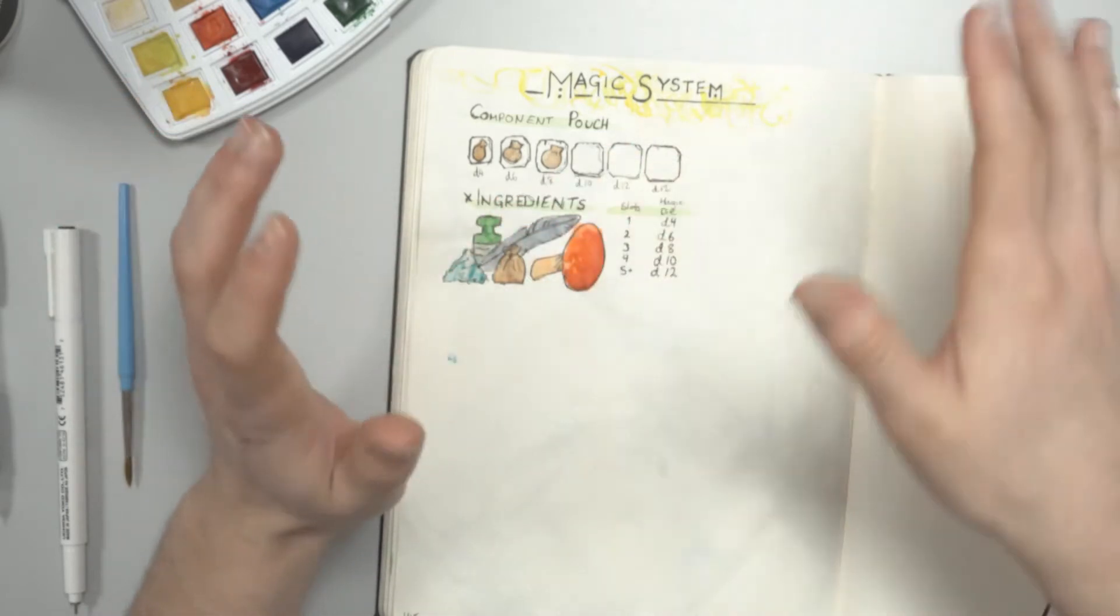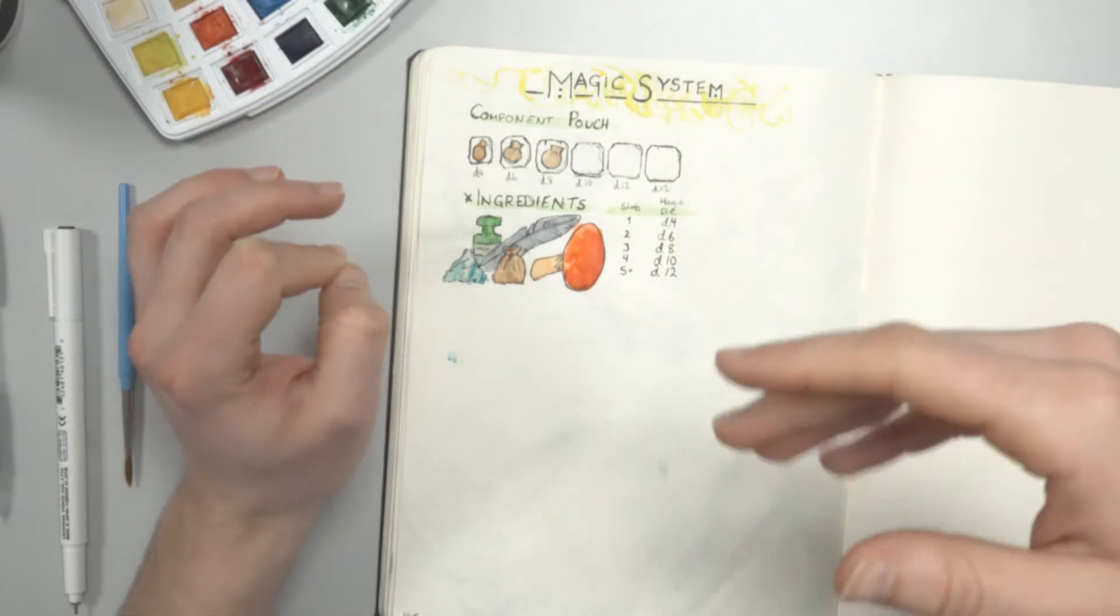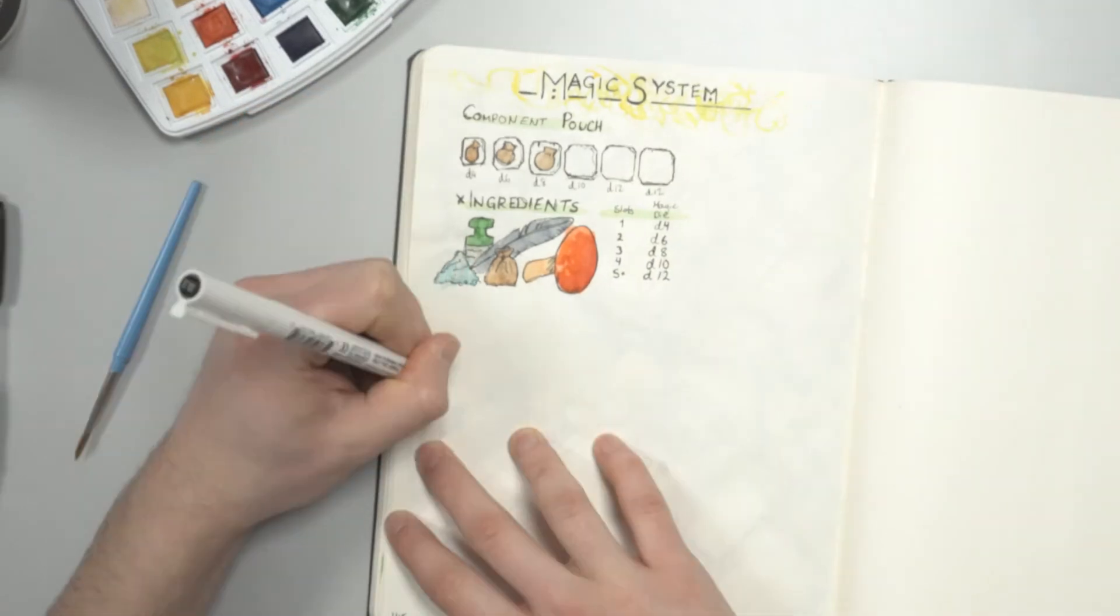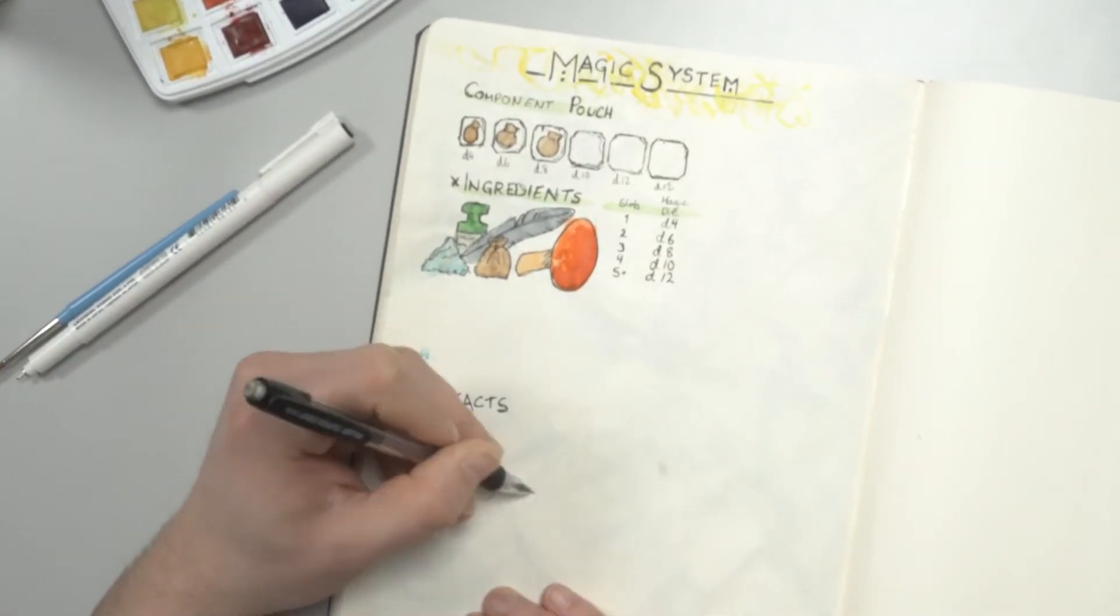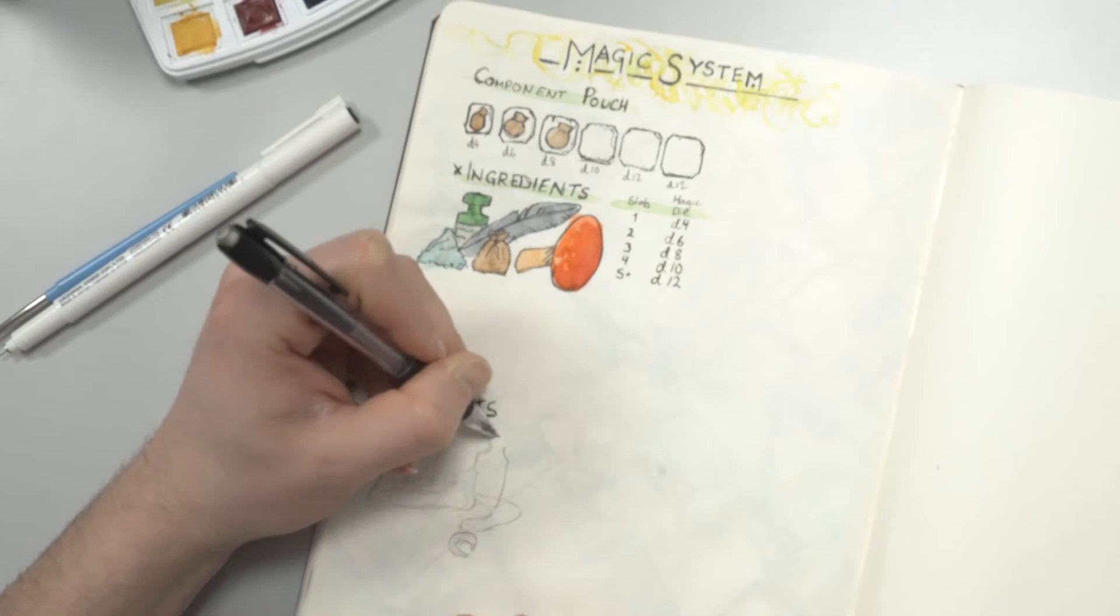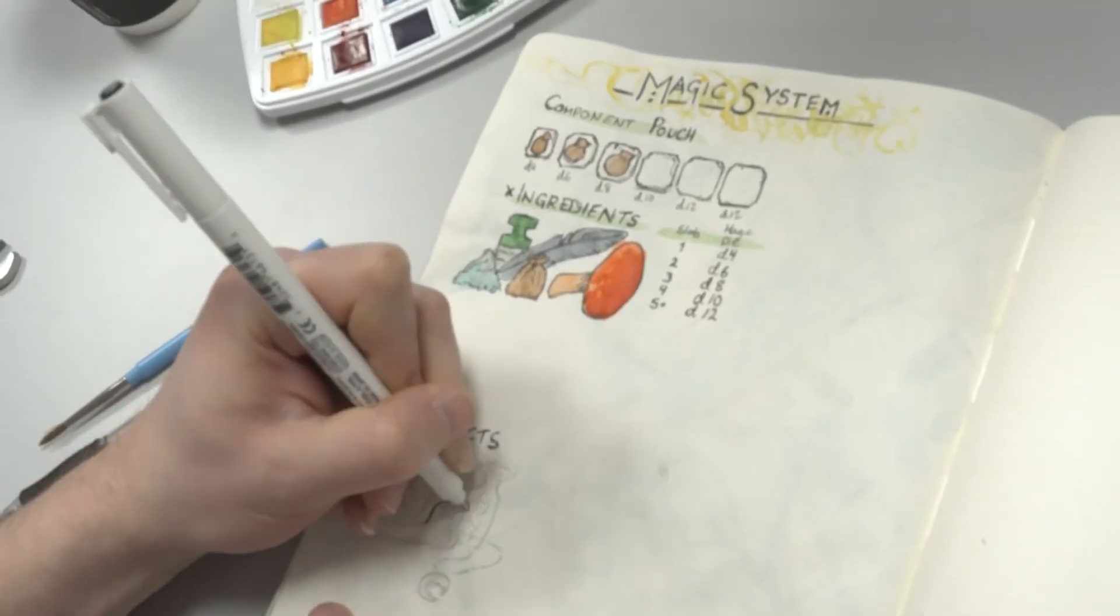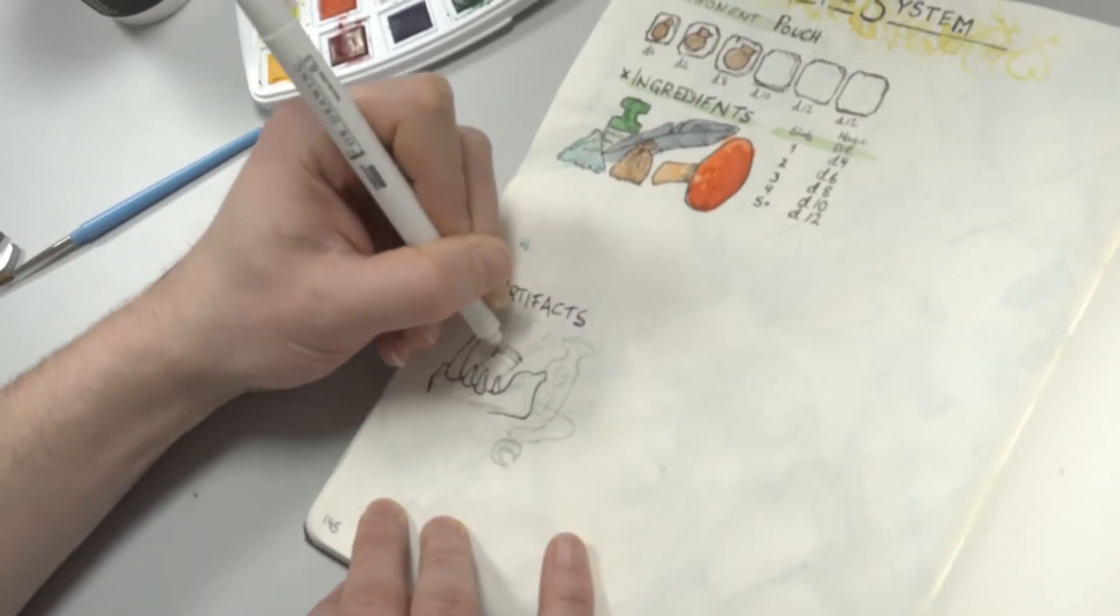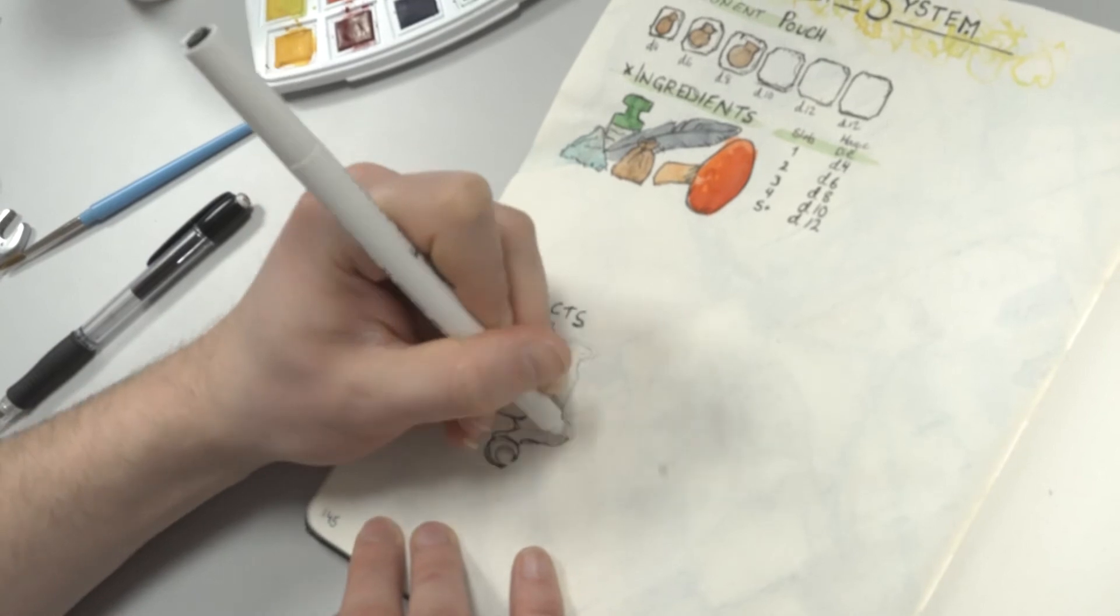Now, let's go over to the two other types of components you can store in your component pouch. Artifacts are unique items. Items like moondust, an amulet with a bound spirit, or the fang of a hundred year old wyvern. Something rare, unique and which has its own ability.